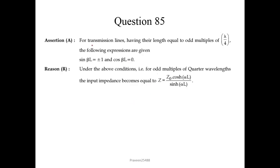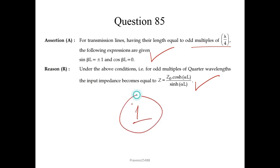Question 85. For transmission lines having length equal to odd multiples of λ/4, sin(βl) = ±1 and cos(βl) = 0 — correct statement for odd multiples of λ/4. Under these conditions, the input impedance becomes Z = Z₀ · cosh(αl) / sinh(αl). This is also a correct statement and the explanation of the assertion. So we choose option 1.